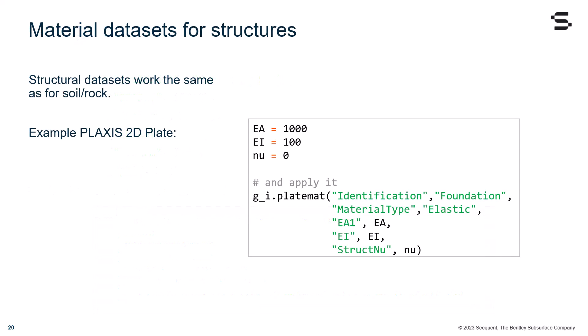Finally, let's see an example on how to define a material dataset for structures. The structural datasets work in the same way as the ones for soil and rock. This means that we need parameter name, parameter value pairs. In this slide,